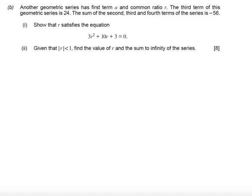Let's look at part b. Part b tells us another geometric series has a first term a and a common ratio r. The third term of this geometric series is 24. So let's use the nth term of the geometric series again. The third term of a geometric series is 24. That means I get a times r, n which is 3 minus 1, gives us 2. So ar squared equals 24.